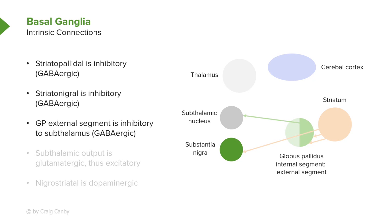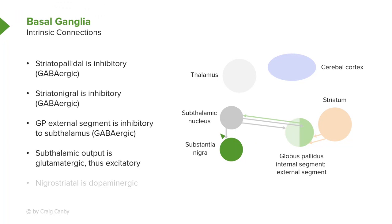The globus pallidus external segment connects with the subthalamus, shown right here. This is also inhibitory in that it is GABAergic. A subthalamic output to the substantia nigra is also shown here, and this is an excitatory pathway in that it is glutamatergic.